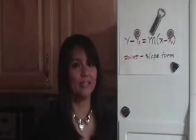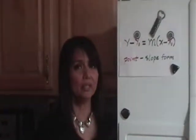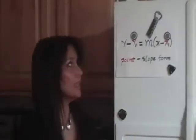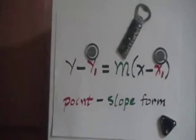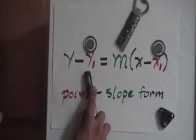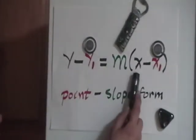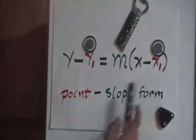Now let me show you how to write an equation of a line if you know a point on the line and the slope of the line. What we will use is the point-slope form of the equation of the line, y minus y sub 1 equals m times the quantity x minus x sub 1.